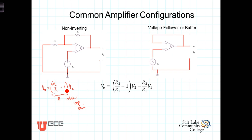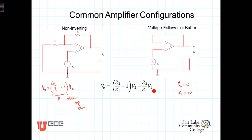Now let's look at the voltage follower or buffer amplifier. Here, not only is V1 equal to zero, but R2 has been replaced with a short circuit. So R2 equals zero and R1 is effectively infinite. We have zero divided by infinity, which is zero. For the voltage follower or buffer amplifier, Vout is just equal to V2.